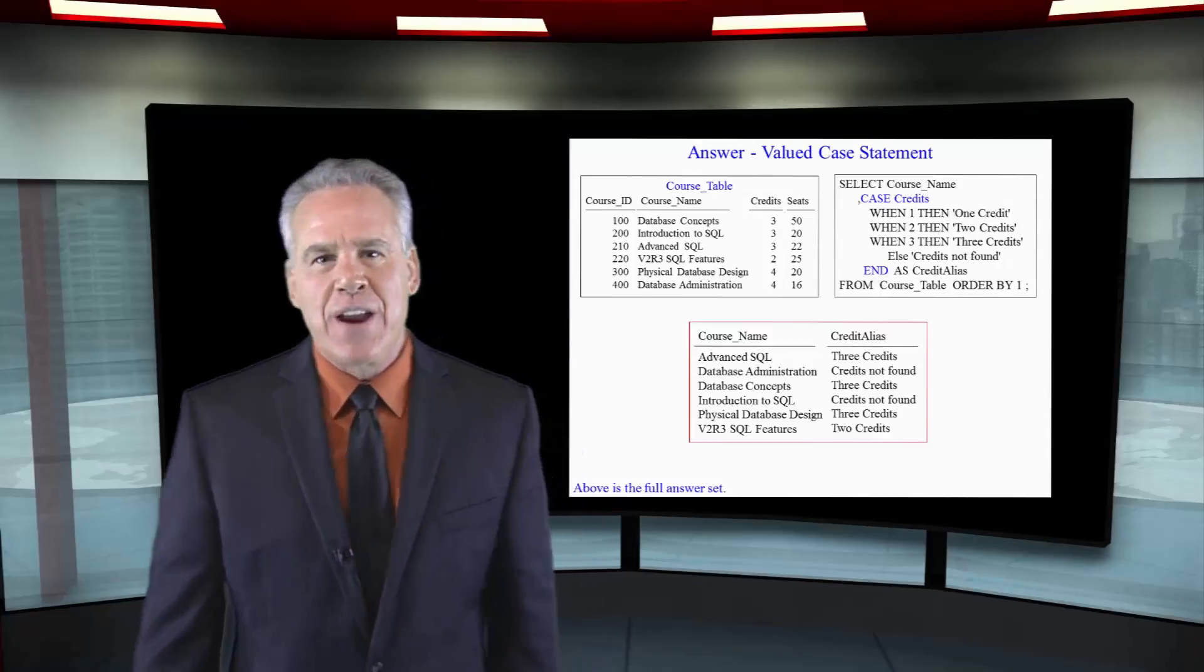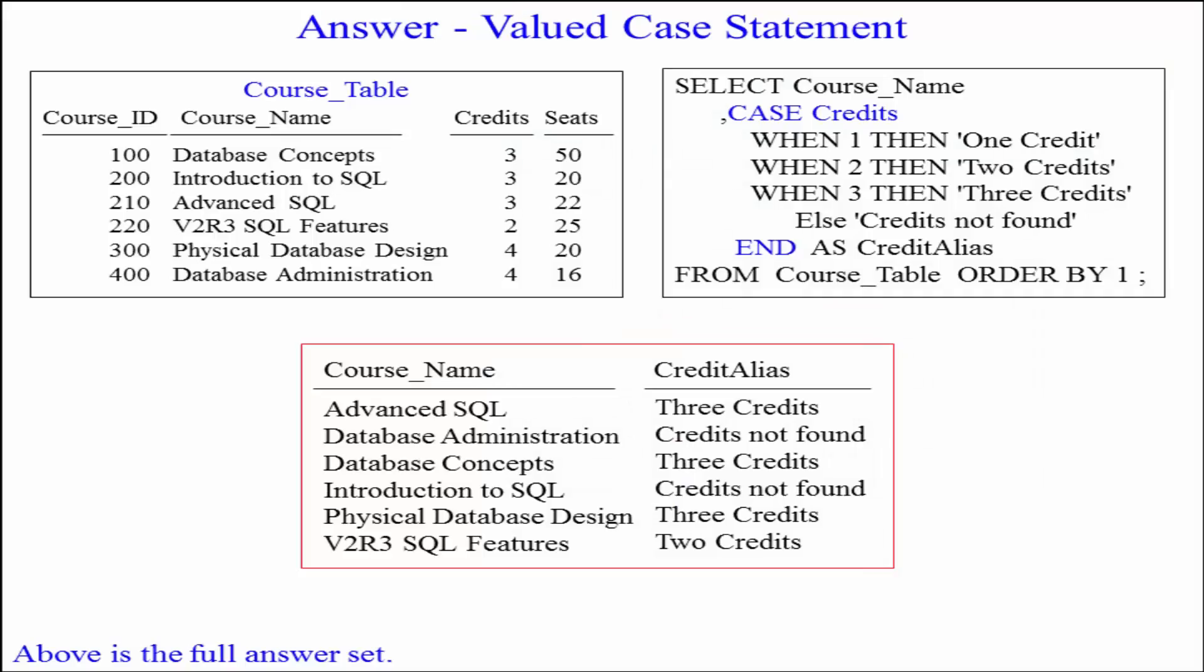Now, let's go to the very last line where it's two credits and we say V2R3 SQL features. It happens to be two credits. It says, is it one? No. Is it two? Yes. Leave.